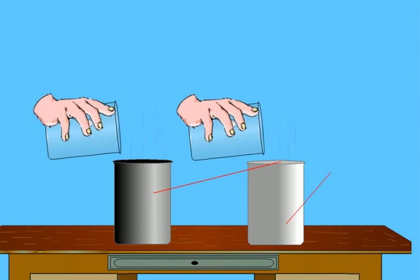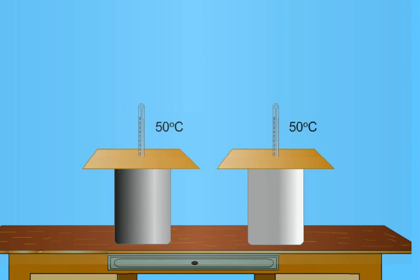Note the temperatures given by both the thermometers after short intervals of time. It is noticed that the water in the can with blackened surface cools faster than the water in the can with polished outer surface.